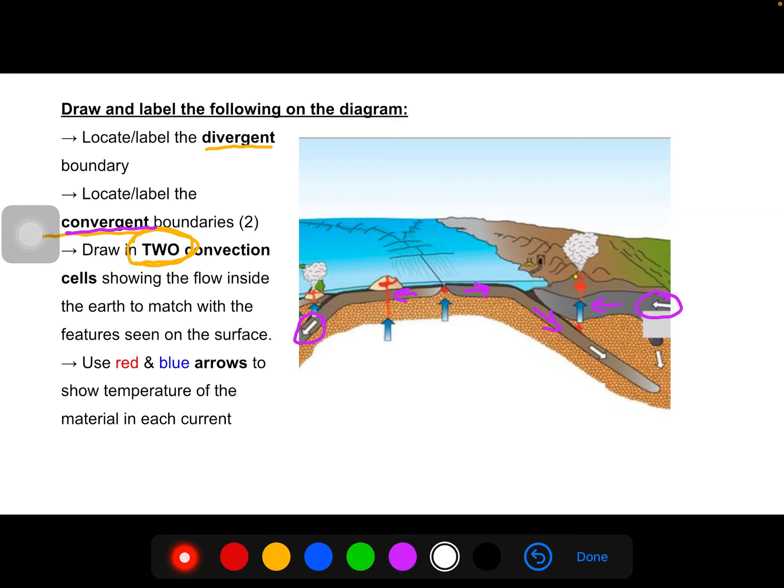So we're going to label up, this is our divergent boundary, convergent boundary, convergent boundary. Boundary being the spot where the two plates meet. So yes, this piece of crust indicates convergent boundary, but we really want to mark it at the spot where the two plates are.